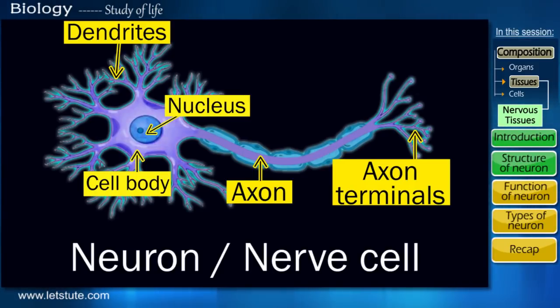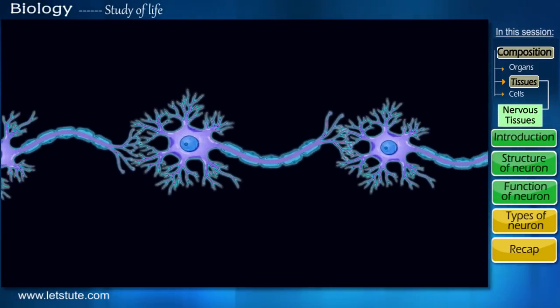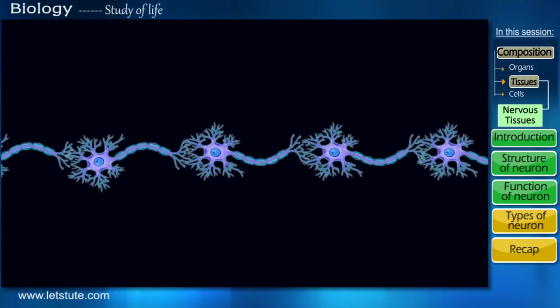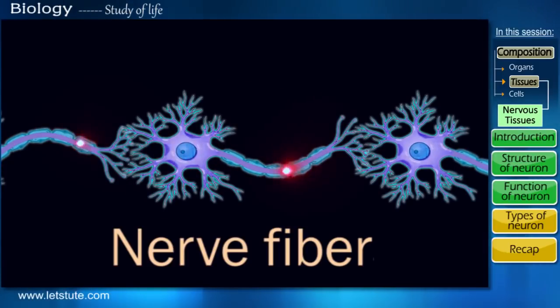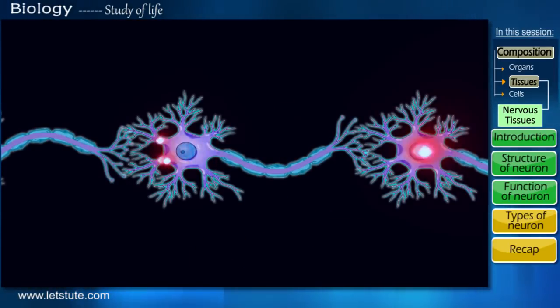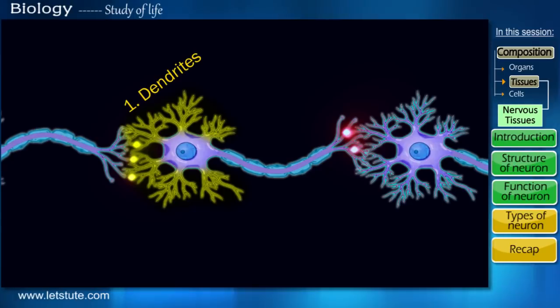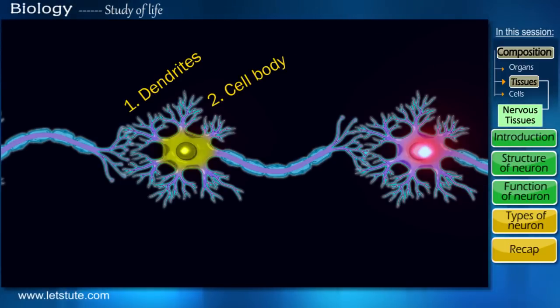Now that we know the shape, let's see the function it has to perform in our body. Nerve cells are connected from end to end in such a way that it forms a long nerve fiber. When a signal is passed from any part of the body, first the dendrites, because of their extensive branches, pick up the signal and pass them to the cell body where it meets the nucleus for processing.